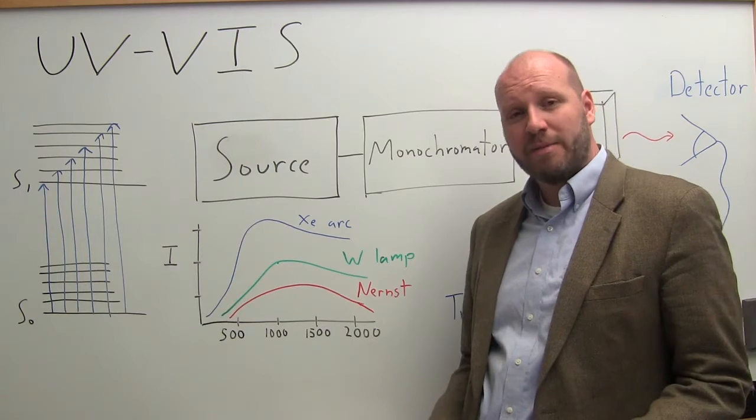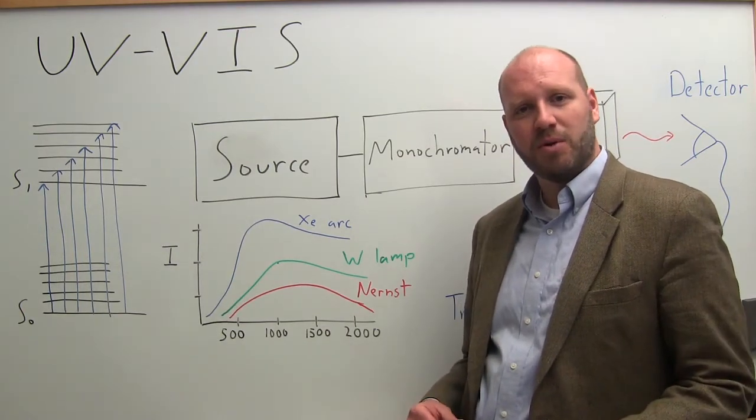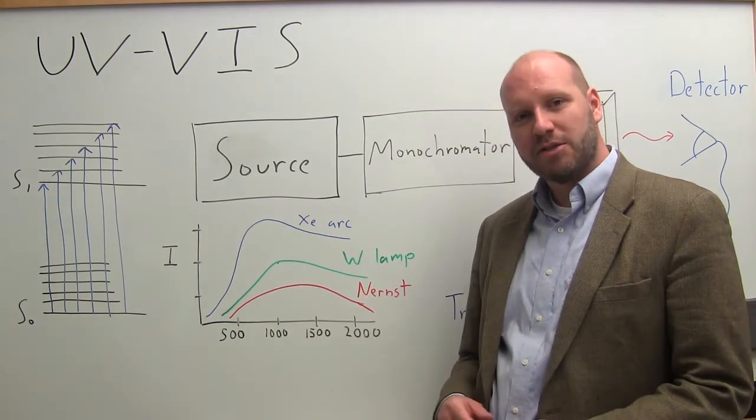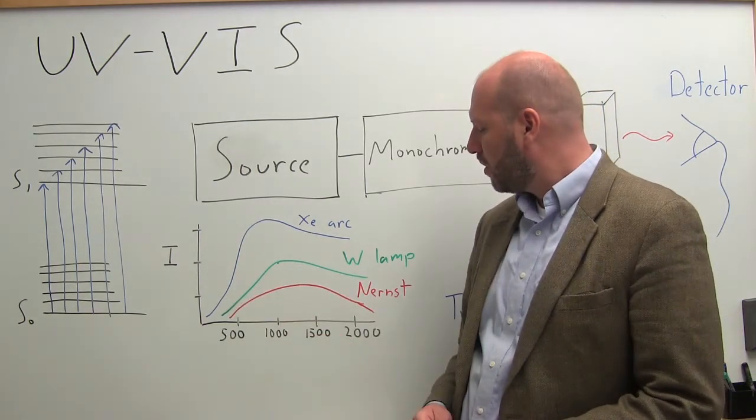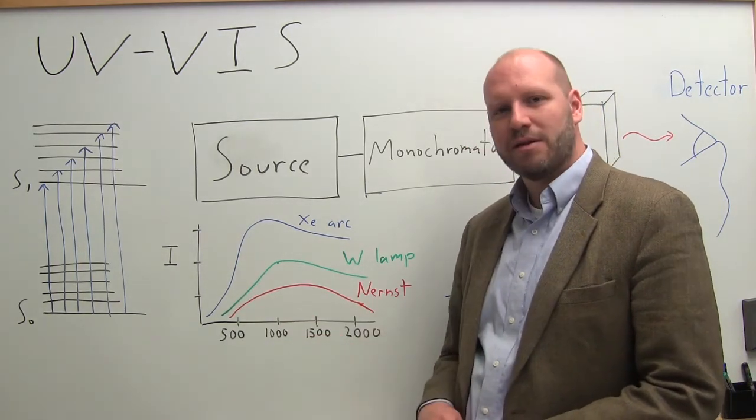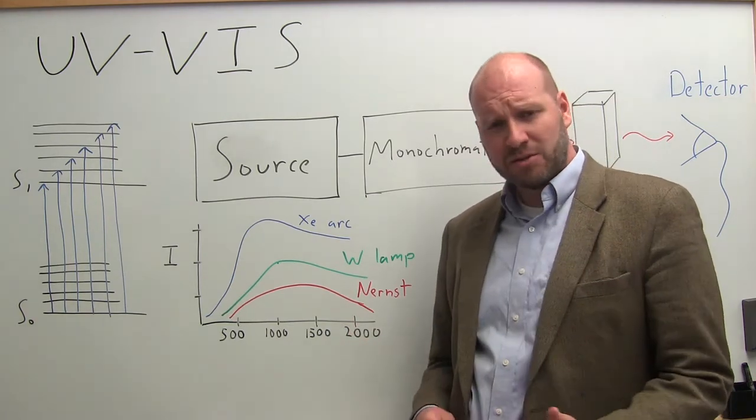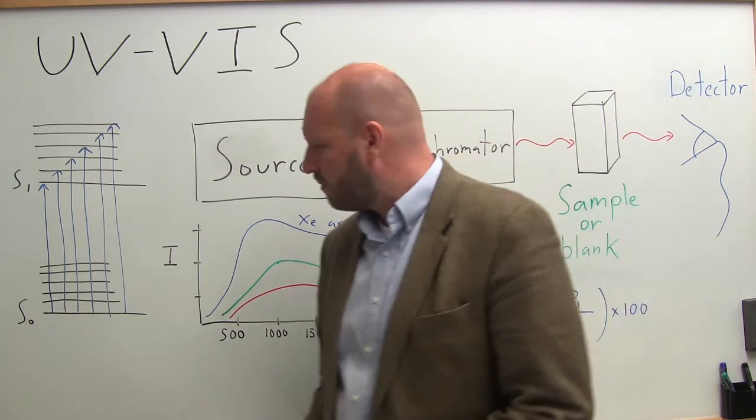Now what I start with is my lamp source, and these are typically light bulbs - things like tungsten lamps, Nernst glowers, xenon arc lamps. They each have a different intensity versus wavelength range. This is the wavelength in nanometers on this axis, and that's going to control the figure of merit for your measurements.